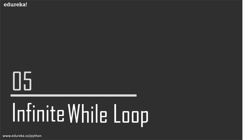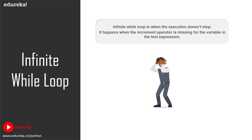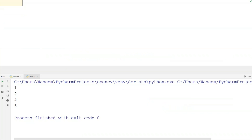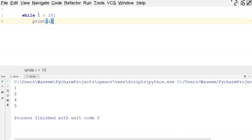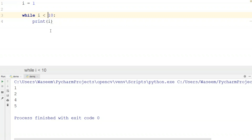Let's move to infinite while loops. An infinite while loop is when execution does not stop — it goes on forever with infinite iterations. Since while loops don't tell us how many iterations will happen, if you miss the increment operator for the test expression variable, execution will go on forever. For example, I is equal to 1, and while I is less than 10, print I — but with no increment operator.